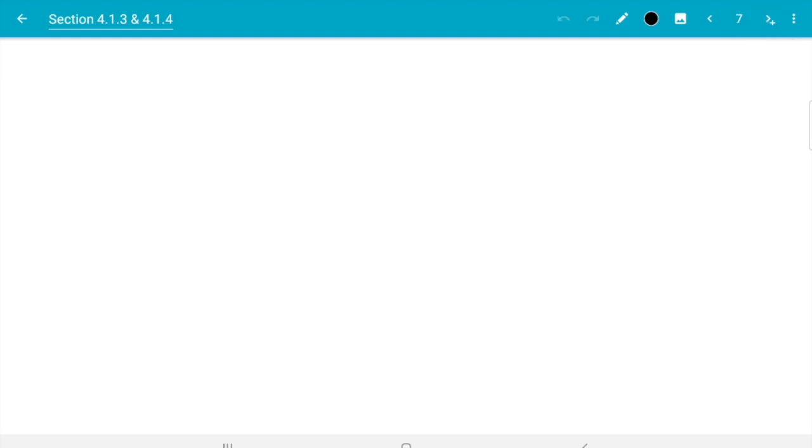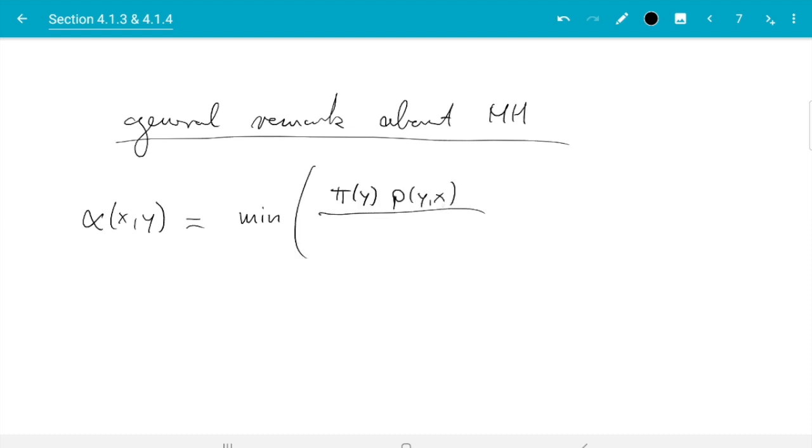Finally, I want to make a general remark about all variants of the Metropolis-Hastings algorithm. The general α was α(x,y) equals minimum of π(y)p(y,x) divided by π(x)p(x,y) and 1. What I want to point out here is something obvious once you think about it: these π's are divided by each other, and that is the only point in the algorithm where π comes in.